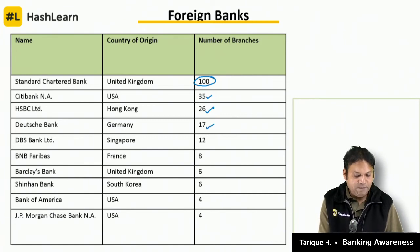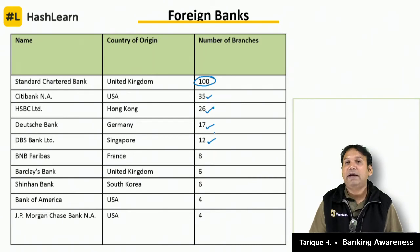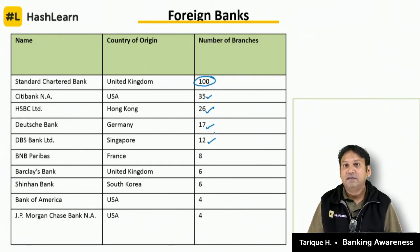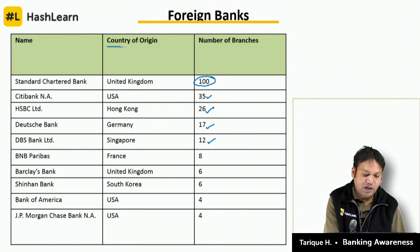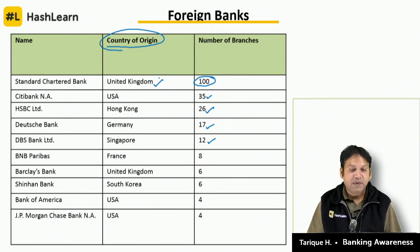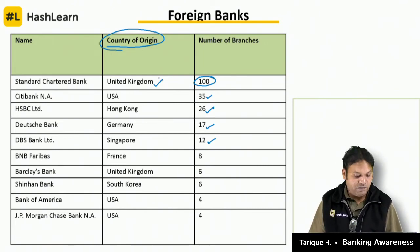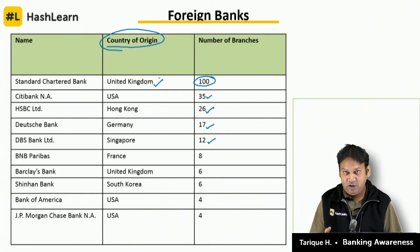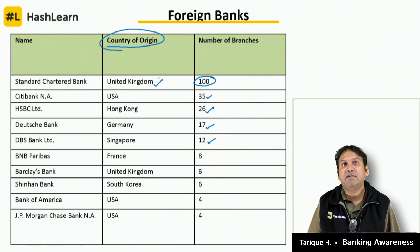By far the top foreign bank by number of branches is Standard Chartered Bank with 100 branches. Distant second is Citibank with 35 branches, followed closely by HSBC. Then DOSH Bank with 17 and DBS Bank Limited with 12. Other banks have single-digit branches: BNP Paribas 8, Barclays Bank 6, Shinhan Bank 6, Bank of America 4, and JPMorgan Chase Bank 4. Standard Chartered is from UK, Citibank from USA, HSBC from Hong Kong, DOSH Bank from Germany, DBS from Singapore, BNP Paribas from France, Barclays from UK, Shinhan from South Korea, Bank of America and JP Morgan Chase from USA.